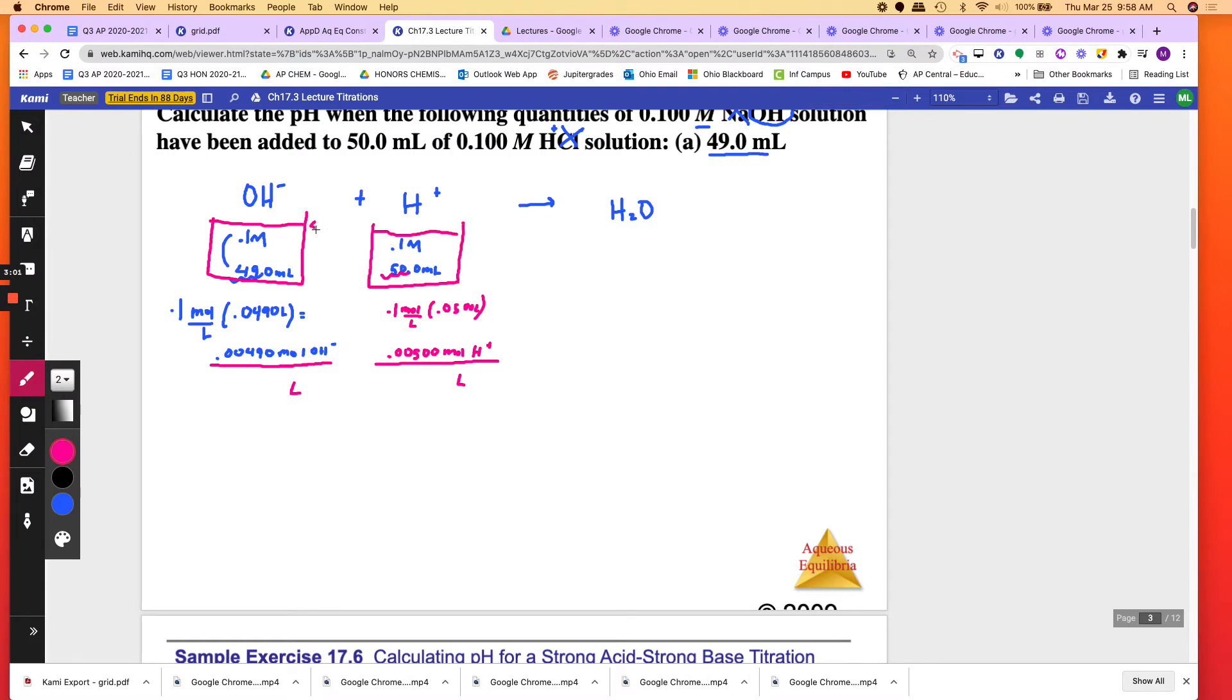You used to have 49.0 mils here, and you have 50.0 mils here. So if you add them together, how many milliliters do you have total? Yes, 49 plus 50 is 99 milliliters, so it's 0.099 liters. You divide those, and you're going to get the molarity. So you have 0.049 here, molar, 0.051 here, molar.